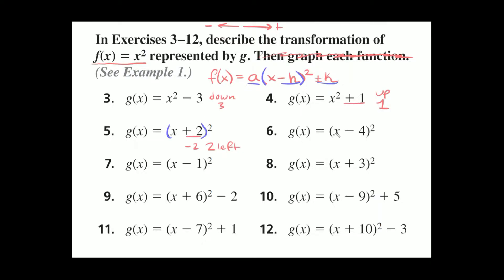Number six: g of x equals x minus 4, in parentheses, squared. Again, this number tells us how many spaces to move it side to side, but we take the opposite number. We have negative 4 here, so we're going to move it positive 4 spaces, which means we're moving it 4 spaces to the right — in the positive direction.